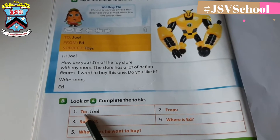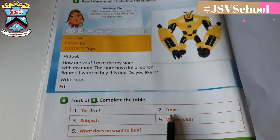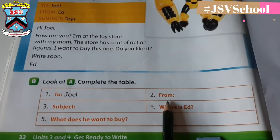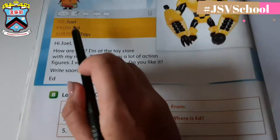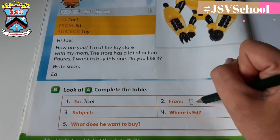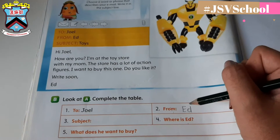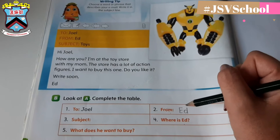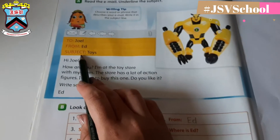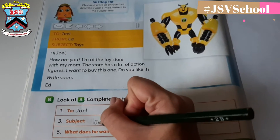The letter will be sent to Joel. Where is the letter from? Who gave the letter? It is from Ed. Let's write here: Ed. Next is number three — what is the subject in the e-mail? What is the e-mail about, or what describes the e-mail? The subject is toys. Let's write on the table: T-O-Y-S.